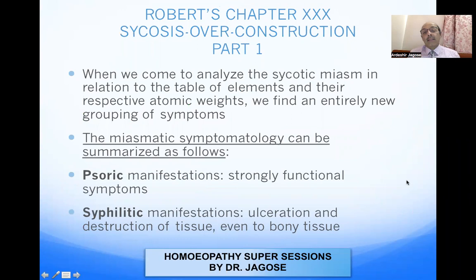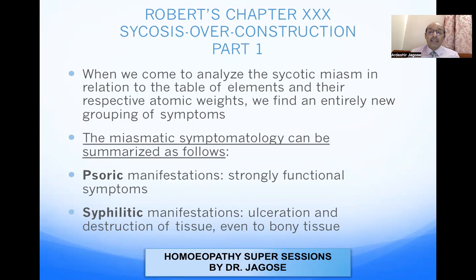In this Chapter 30, Psychosis Over Construction, Part 1, when we come to analyze the psychotic miasm in relation to the table of elements and their respective atomic weights, we find an entirely new grouping of symptoms. Robert says that analyzing the psychotic miasm in relation to the table of elements and atomic weights reveals an entirely new group of symptoms. The miasm symptom methodology can be summarized as follows.